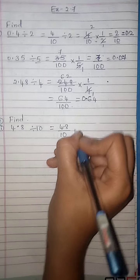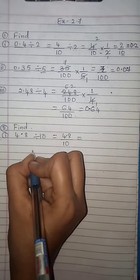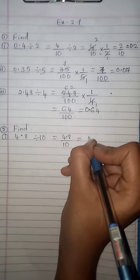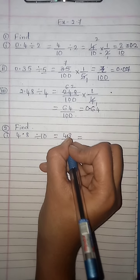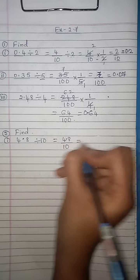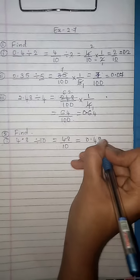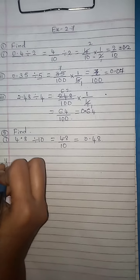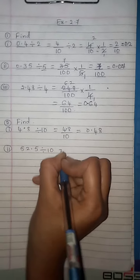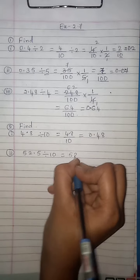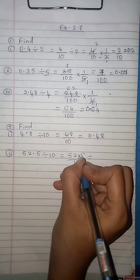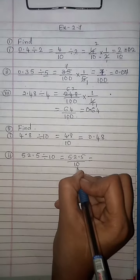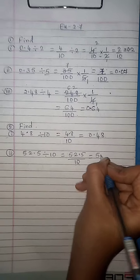4.8 divided by 10 — on dividing a decimal number by 10, the decimal point is shifted to the left by 1 place. Shift the decimal point to the left side by 1 place, and you get 0.48. Second one: 52.5 divided by 10. On dividing a decimal number by 10, the decimal point is shifted to the left side by 1 place because there is 1 zero. That gives 5.25.